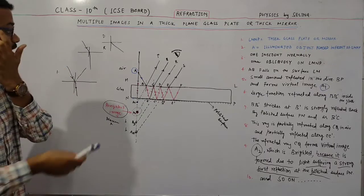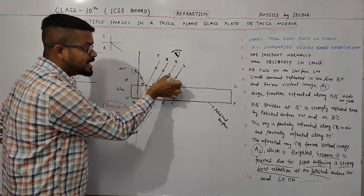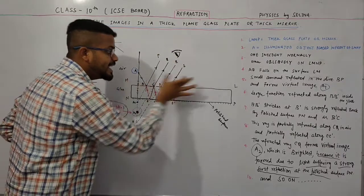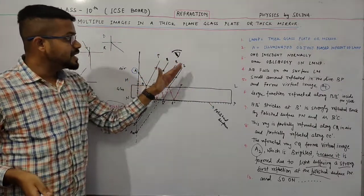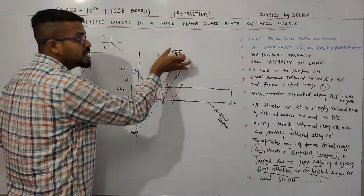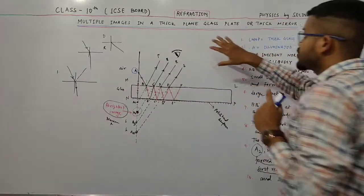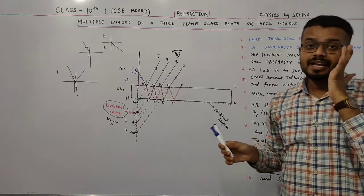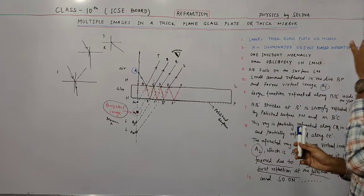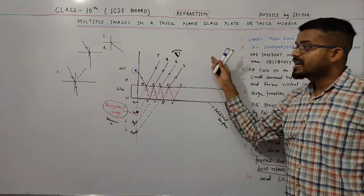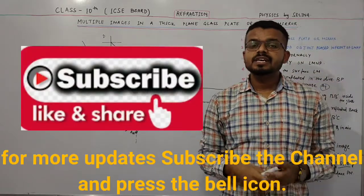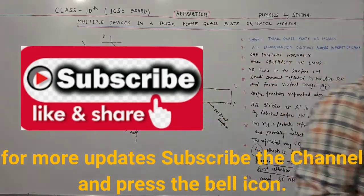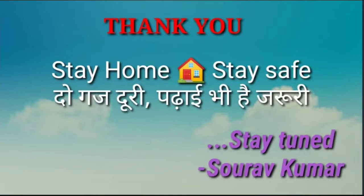Rays P, Q, R, S are all separated from each other and parallel, and all go to the eye. In the diagram they appear separated, but in reality they all go to the eye simultaneously. This is all about multiple images in a thick glass plate or thick mirror, and the chapter on refraction of light through a plane surface is now complete. If you have any confusion, please put a comment in the comment box. Thank you for watching. Have a great day.